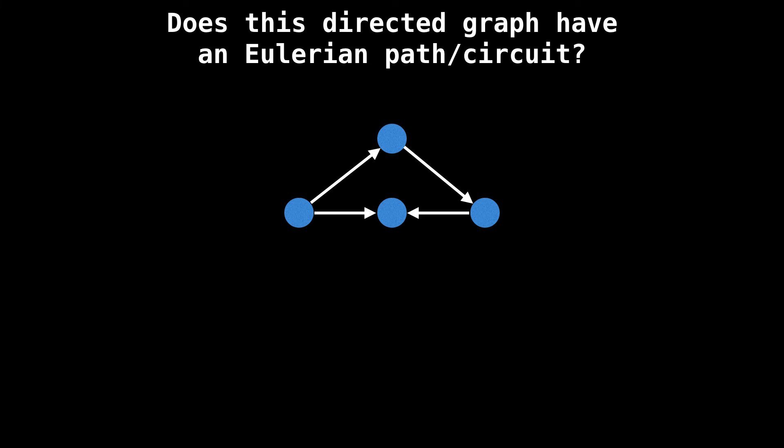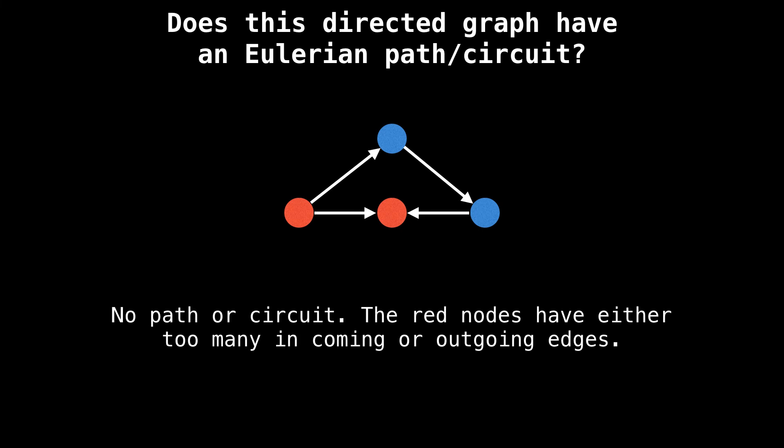What about this graph? This graph has no Eulerian paths or circuits. The red nodes either have too many incoming or outgoing edges for an Eulerian path or circuit to exist.